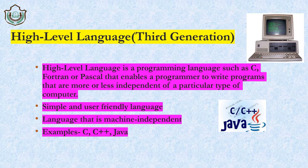High level language is simple and user friendly. It uses English alphabet-based language and is machine independent. Some examples of high level programming languages are C, C++, and Java. Now, back to the question — how does the computer understand high level language? Let's look at the solution.